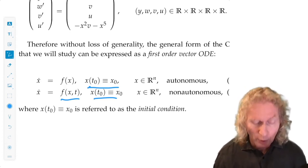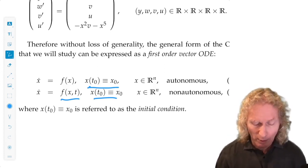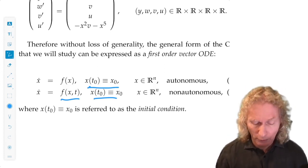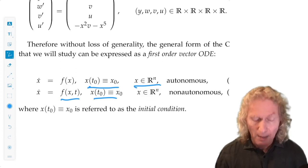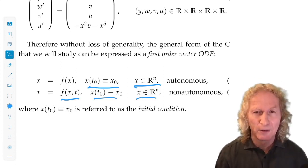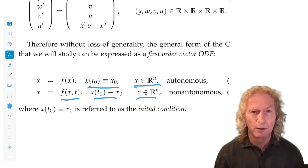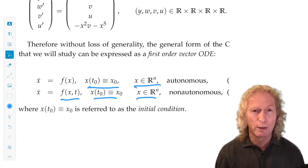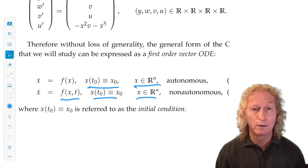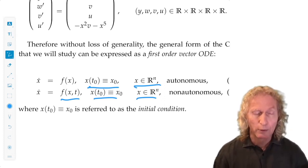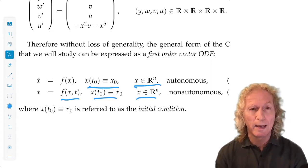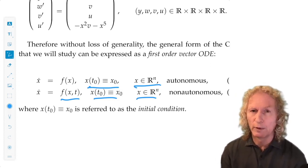The space of dependent variables for this first order system is called the phase space. When represented as a first order vector equation, the space of dependent variables is the phase space. The solutions, x of t, are a curve in phase space.